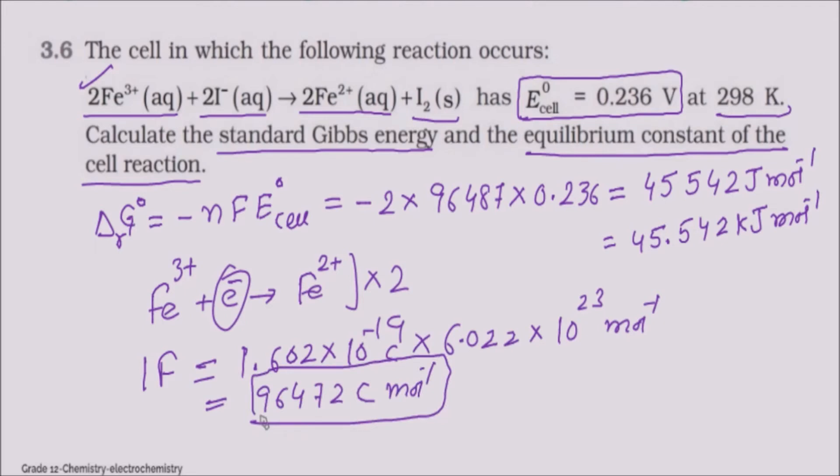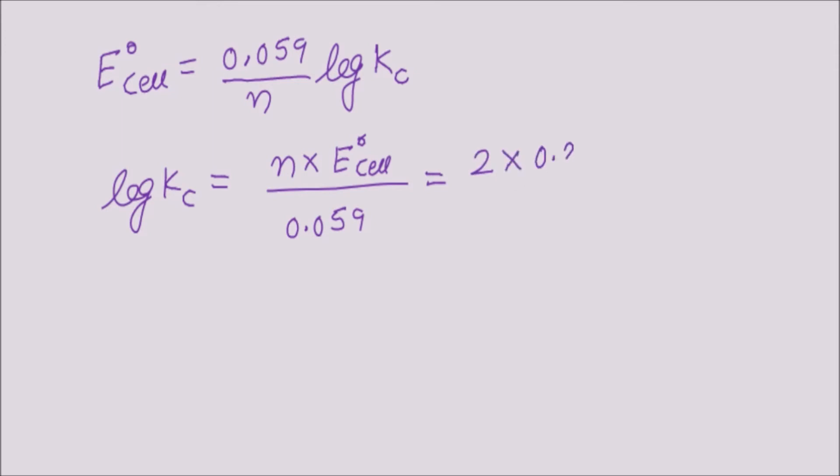Now equilibrium constant. For equilibrium constant, E°cell is equal to 0.059 by n into log of Kc. Log of Kc equals n into E°cell by 0.059, so 2 into 0.236 over 0.059.